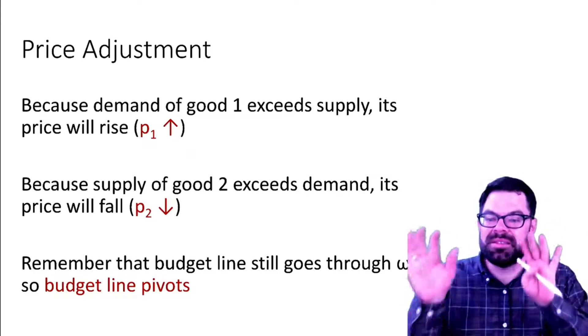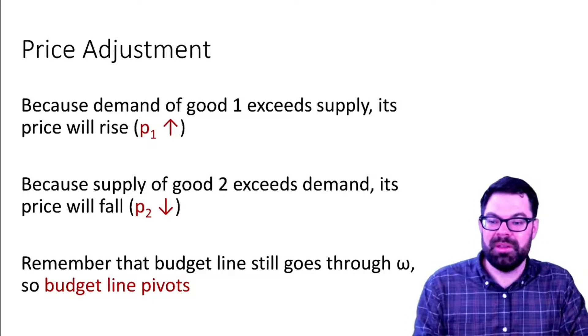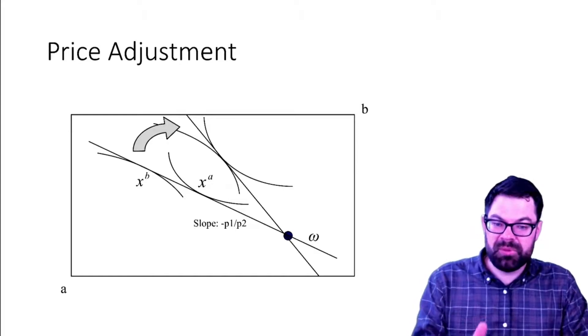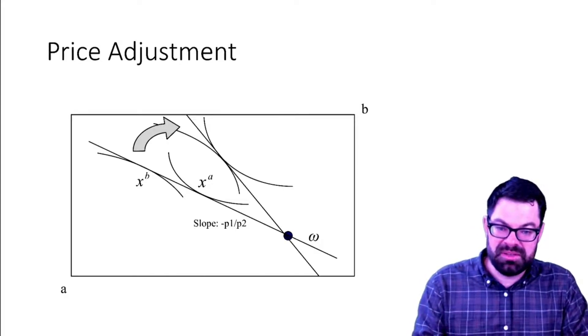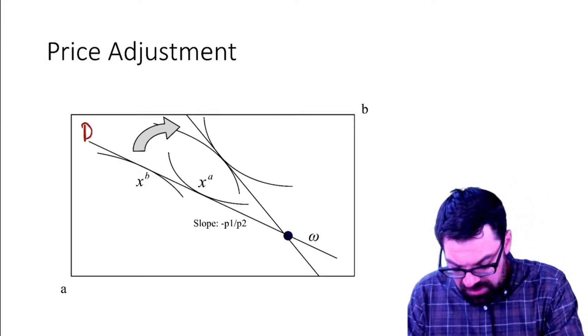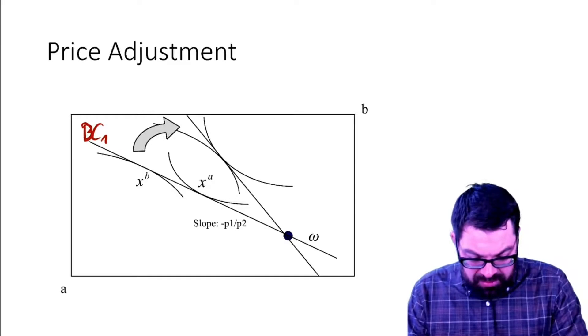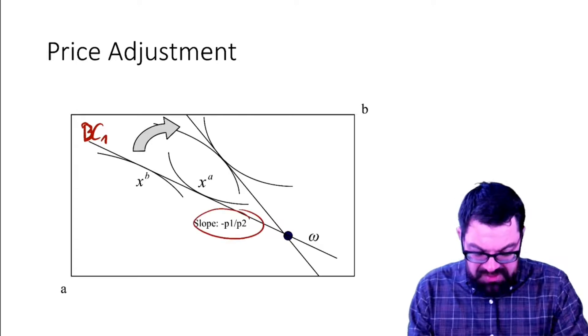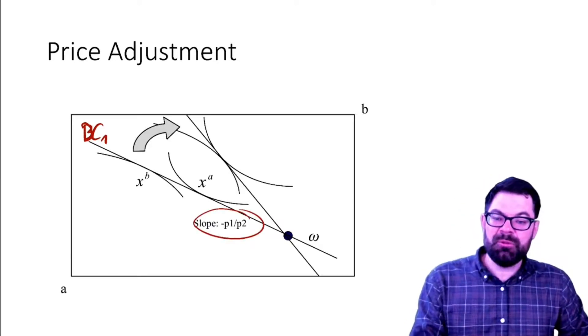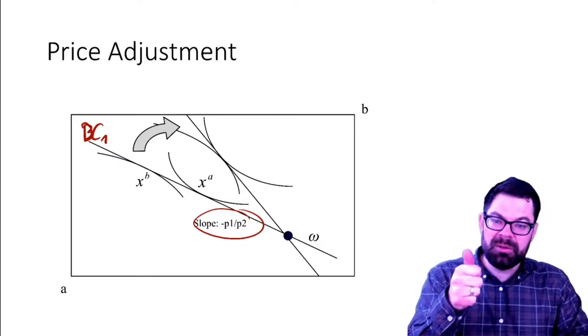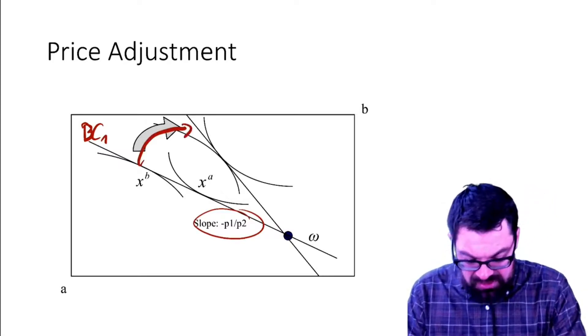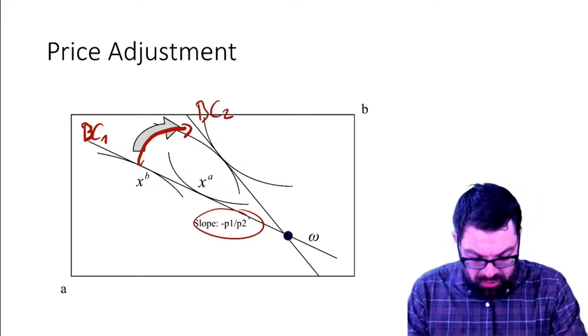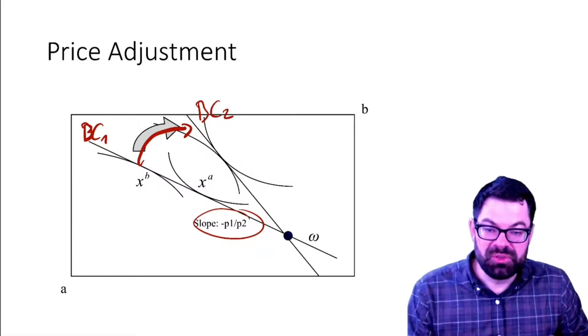Now what that means graphically is that the budget line pivots around the endowment point. We have the initial budget line, I'm gonna call it BC1. Remember the slope was minus p1 over p2, so now if p1 goes up and p2 goes down, we see this line pivot and we reached BC2.